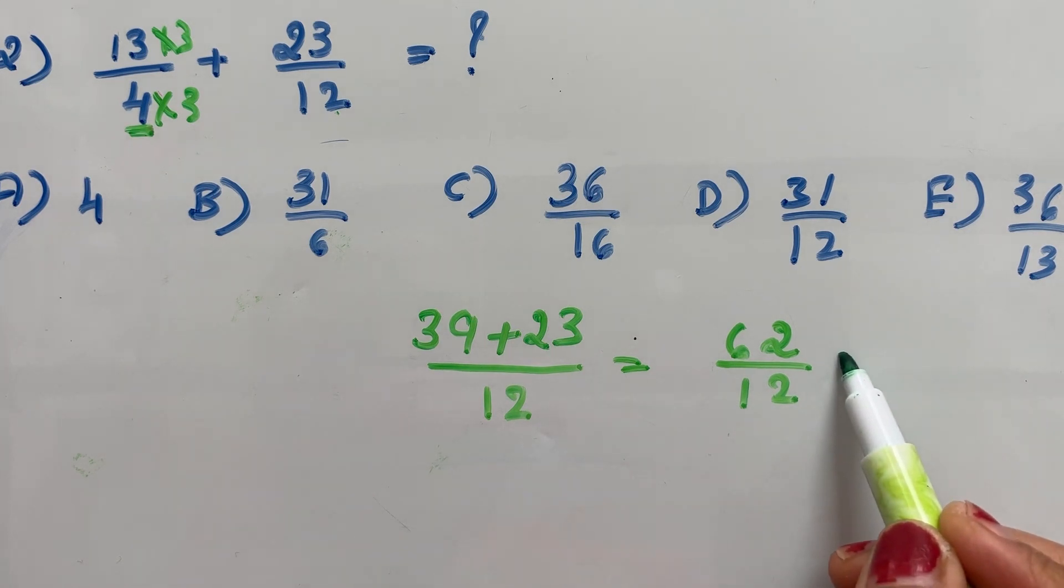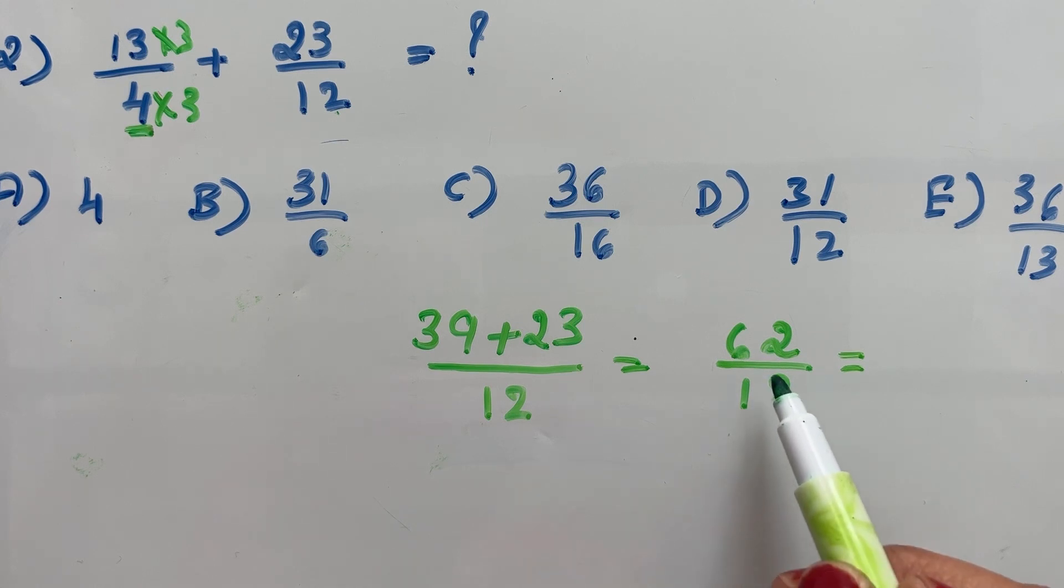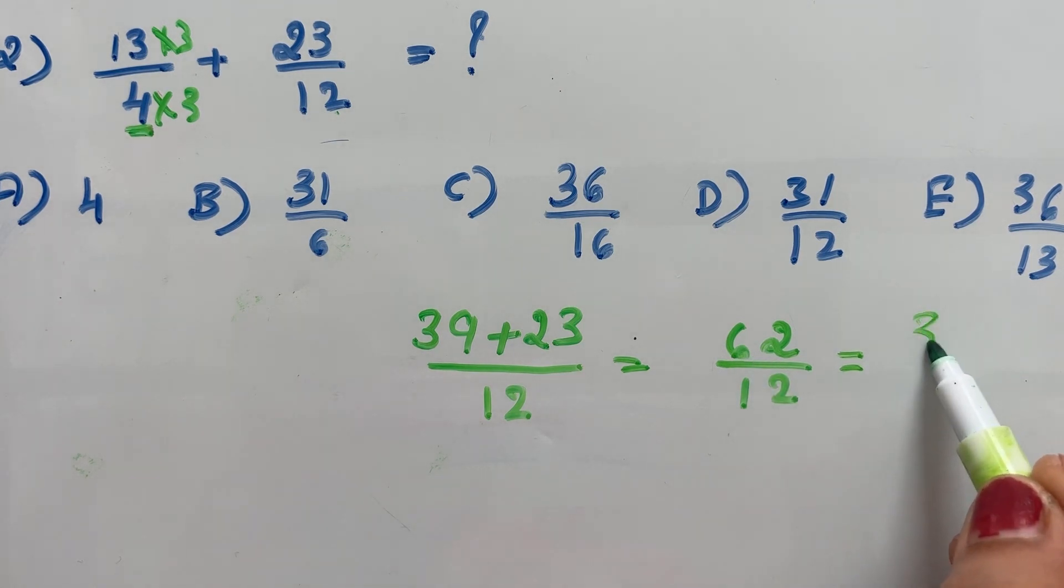Simplifying this 62 over 12. Both 62 and 12 are divisible by 2. When you divide 62 by 2 is 31, and 12 divided by 2 is 6.